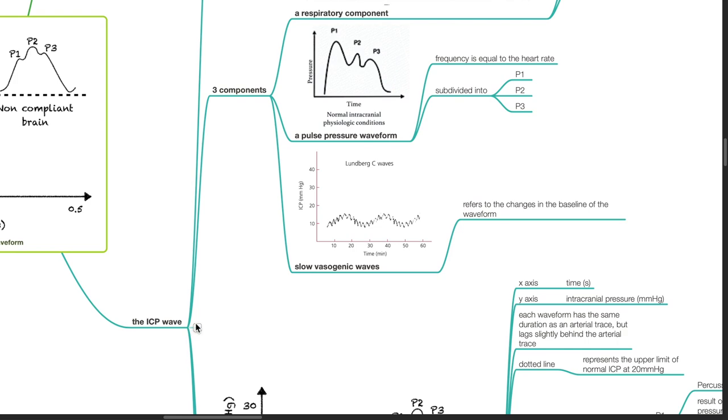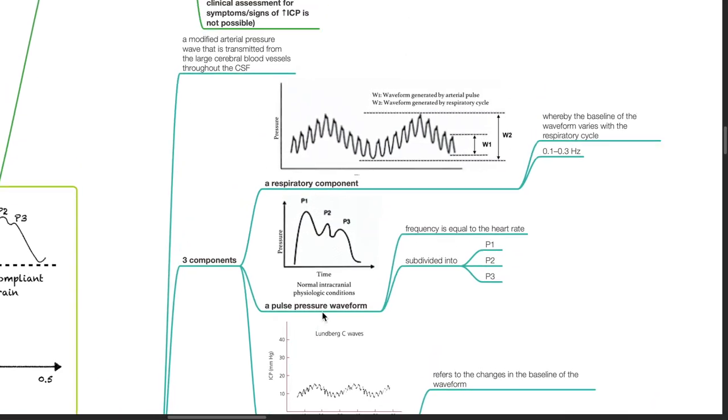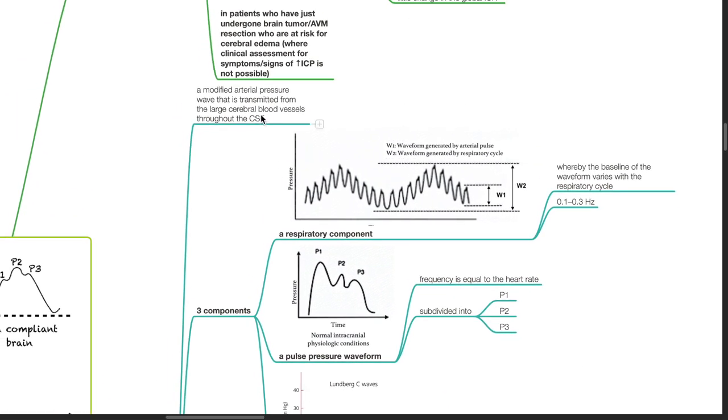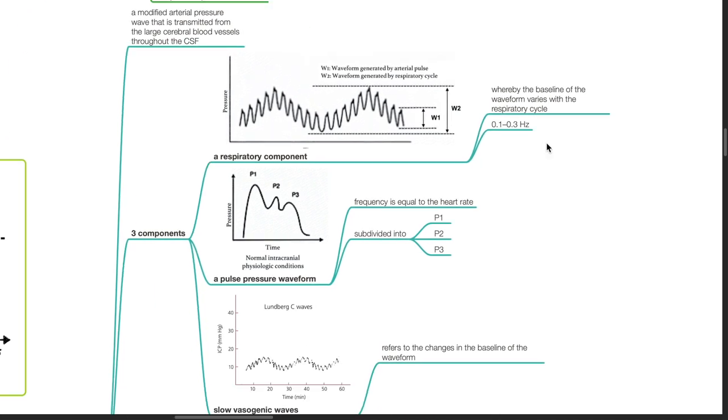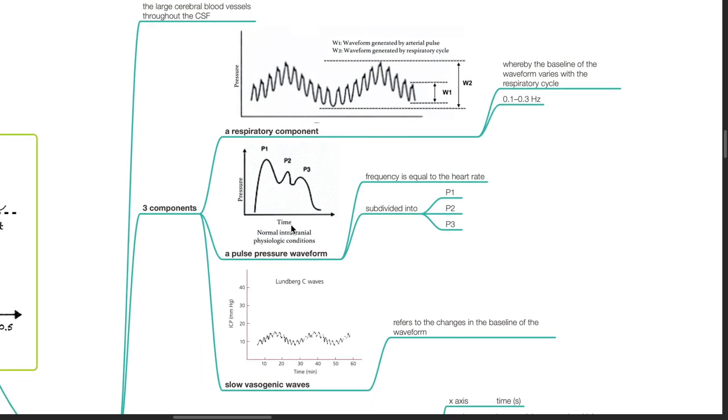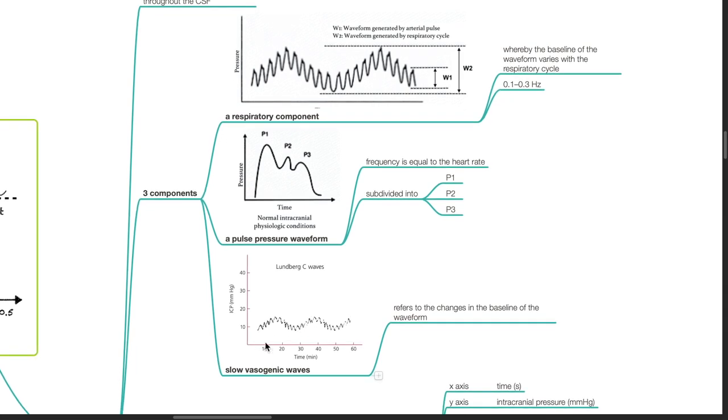The ICP wave. It is a modified arterial pressure wave that is transmitted from the large cerebral blood vessels throughout the CSF. There are three components: a respiratory component whereby the baseline of the waveform varies with the respiratory cycle at 0.1 to 0.3 Hz; a pulse pressure wave, frequency equal to the heart rate, subdivided into P1, P2, and P3 which will be discussed further; slow vasogenic waves, referring to changes in the baseline of the waveform.